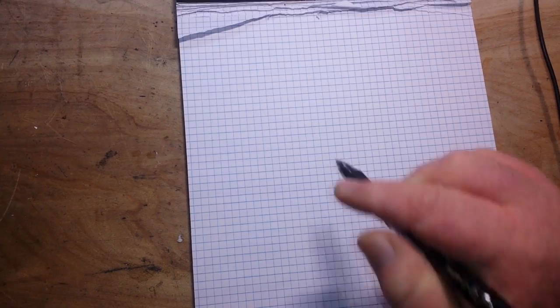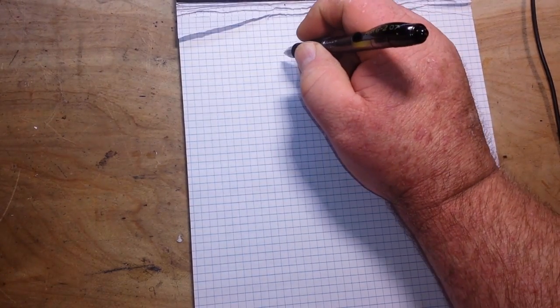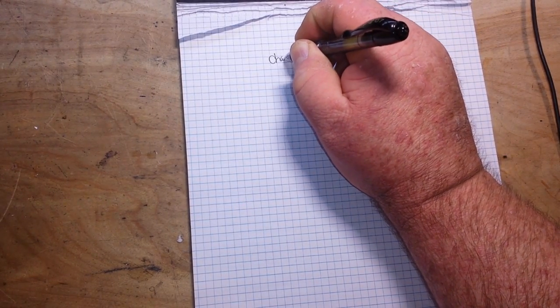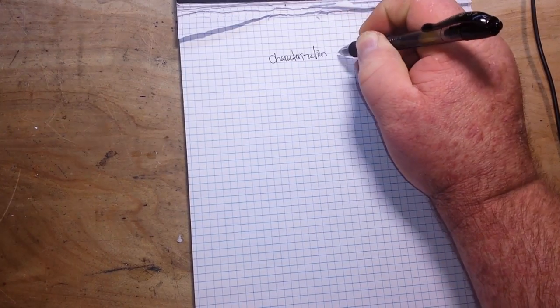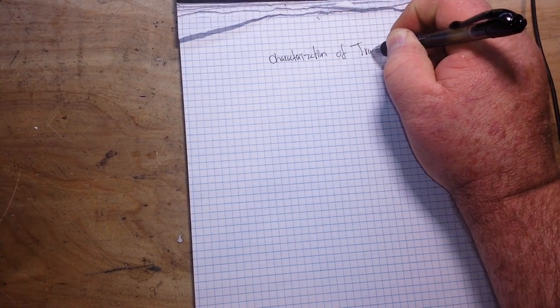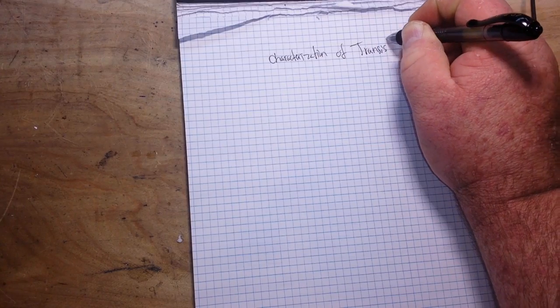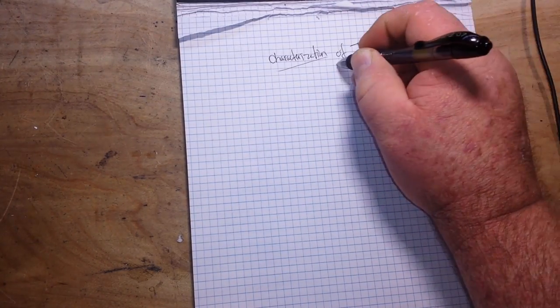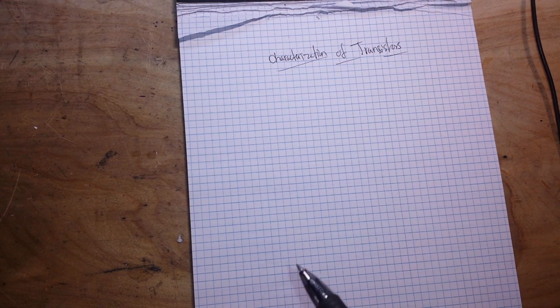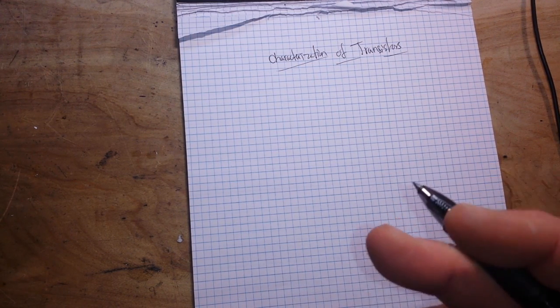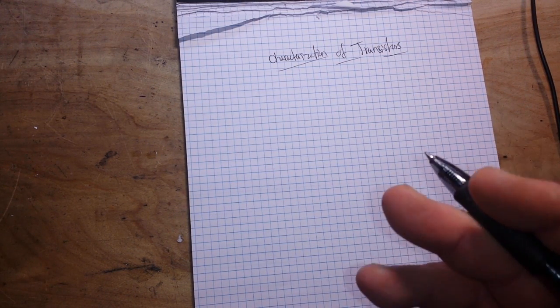What's happening guys? Yeah, I know I got the graph paper out. We're going to start talking about something a little bit deeper, and that is the characterization of transistors.